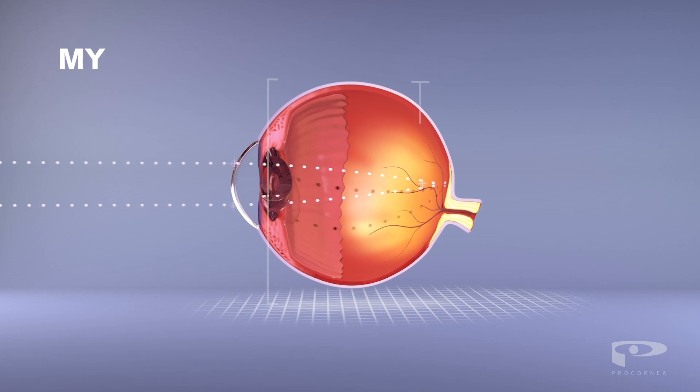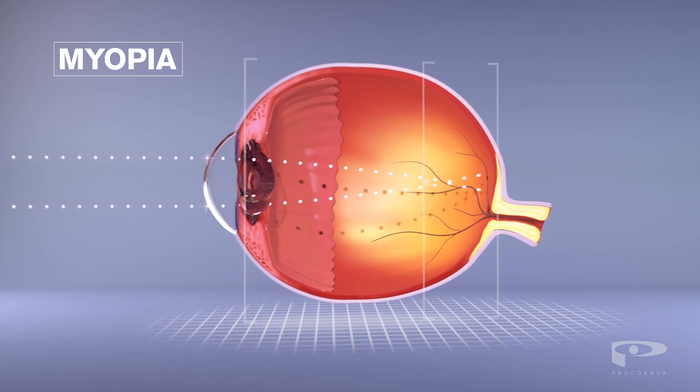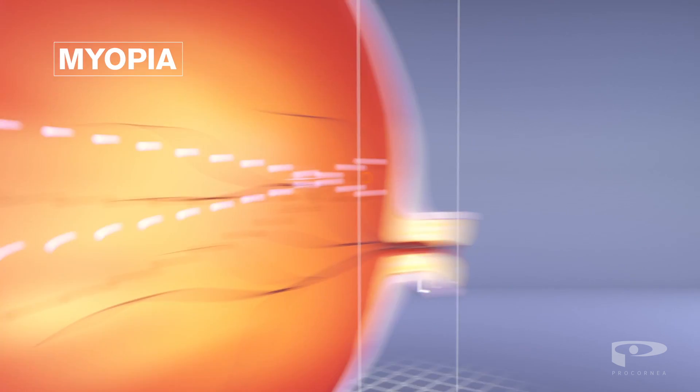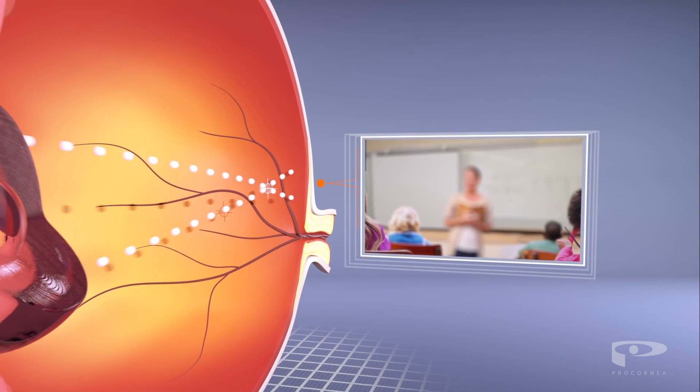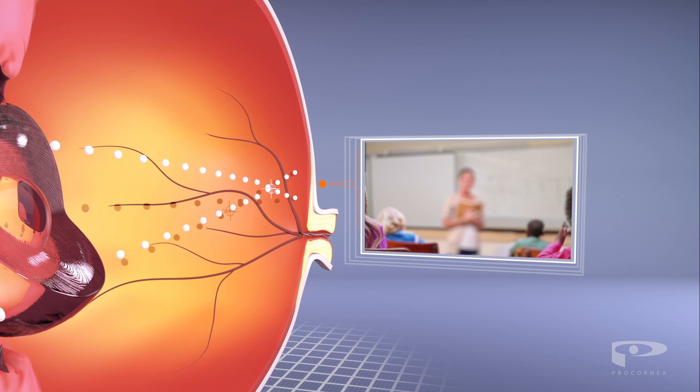In the case of myopia or nearsightedness, the eye grows too long. Light then focuses on the front of the retina, after which it disperses, causing distance vision to become blurred.